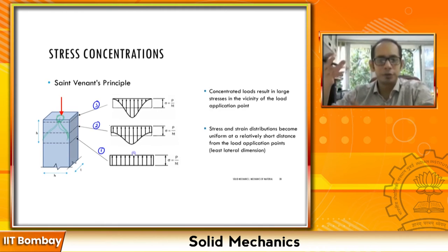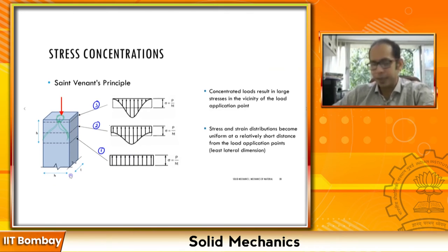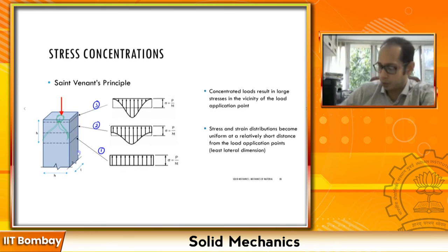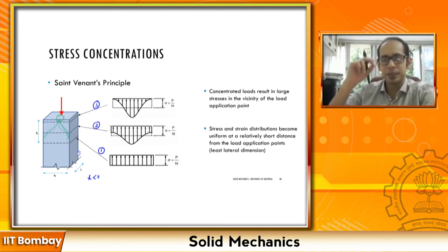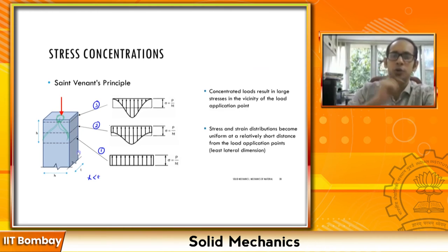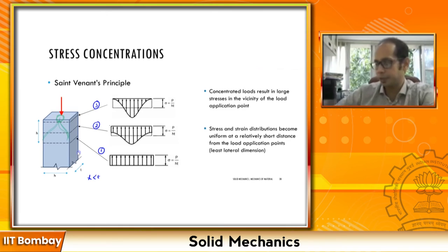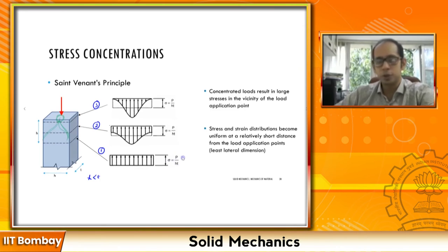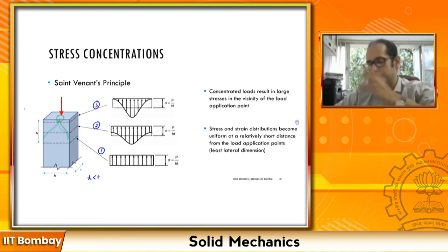At what distance does uniformity prevail? Saint-Venant found that if the member has dimensions h and t, where h is the least lateral dimension, then at a distance equal to h from the point of load application, uniformity prevails. In those regions you can apply sigma = P/A, where A equals h times t — the cross-sectional area of the rectangular block.